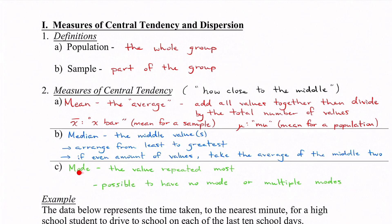Lastly we have mode. Mode is the value repeated most. If a measurement of 20 centimeters gets repeated the most, that would be the mode. It is possible to have no mode if no number gets repeated, or you can have multiple modes — for example, if 20 centimeters happens five times and 25 centimeters happens the same number of times, both would be the mode.